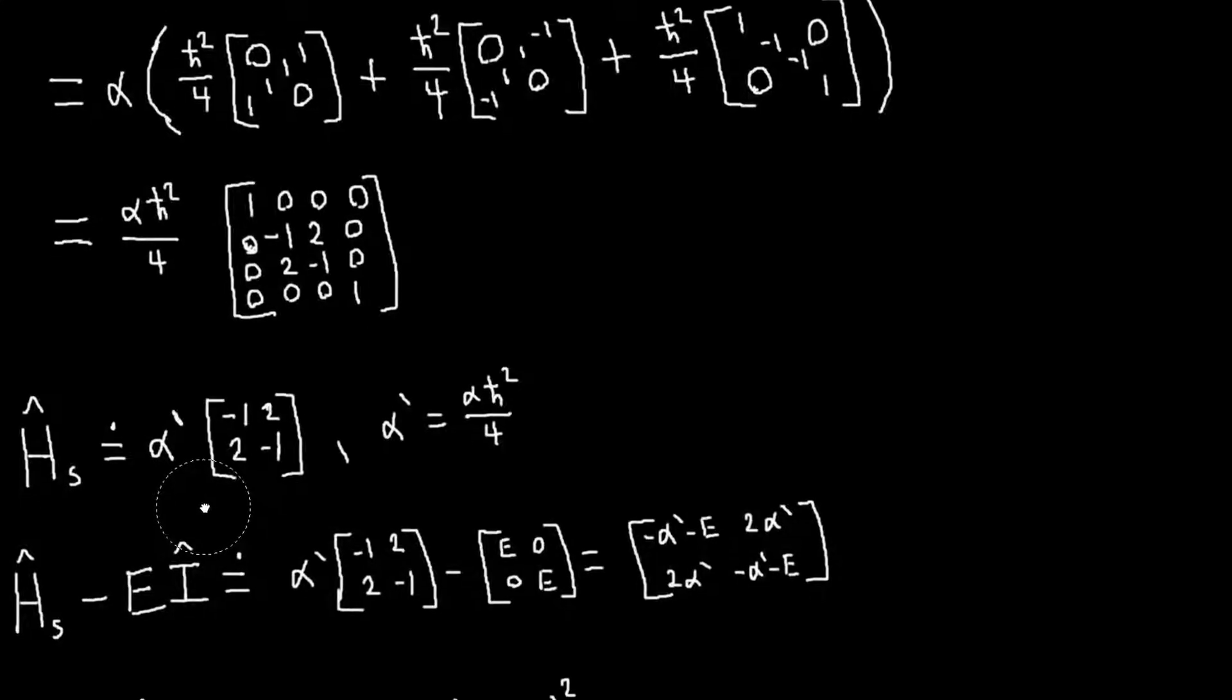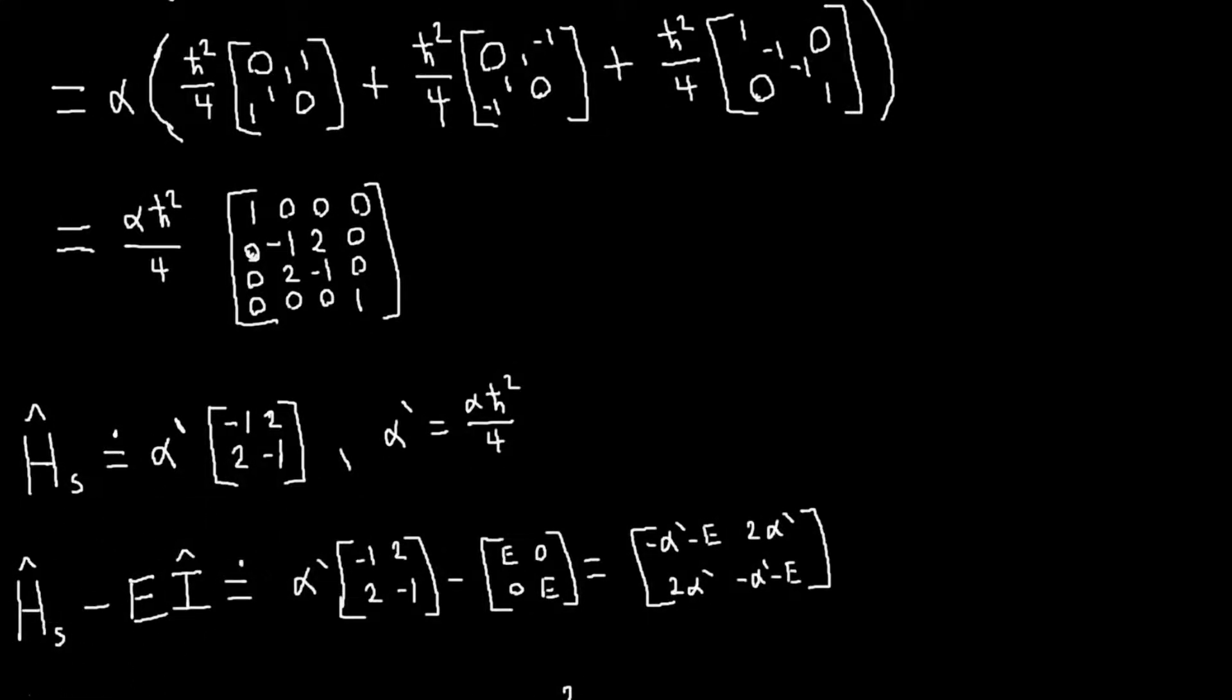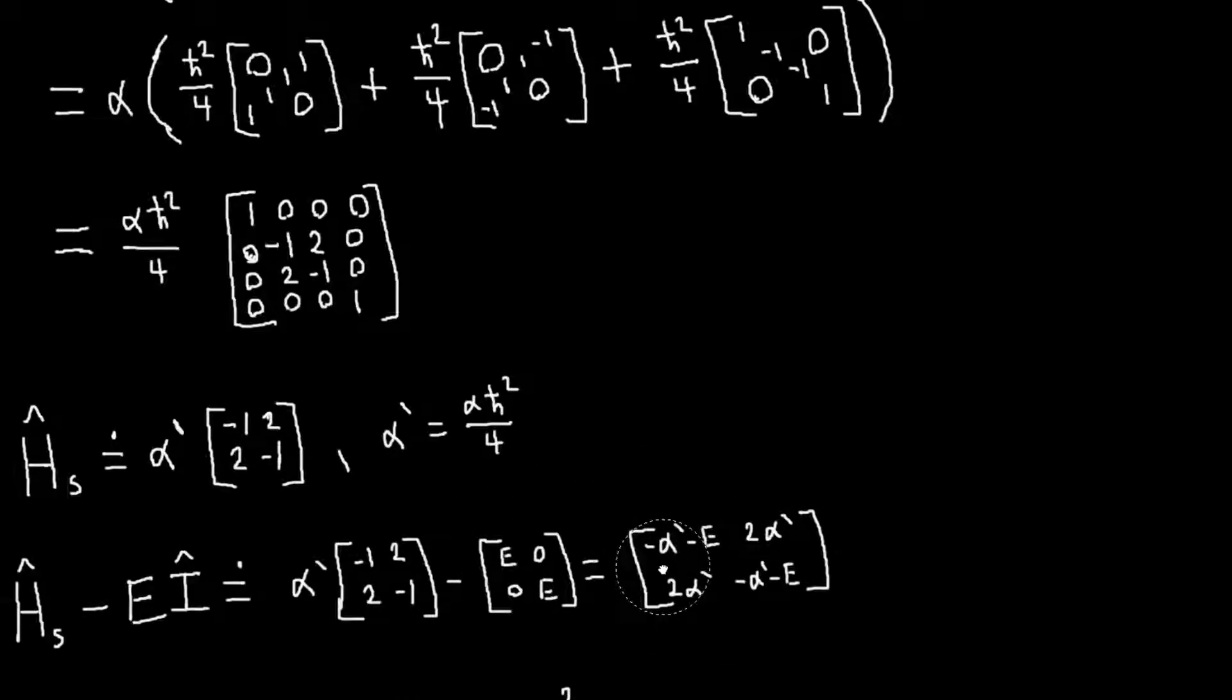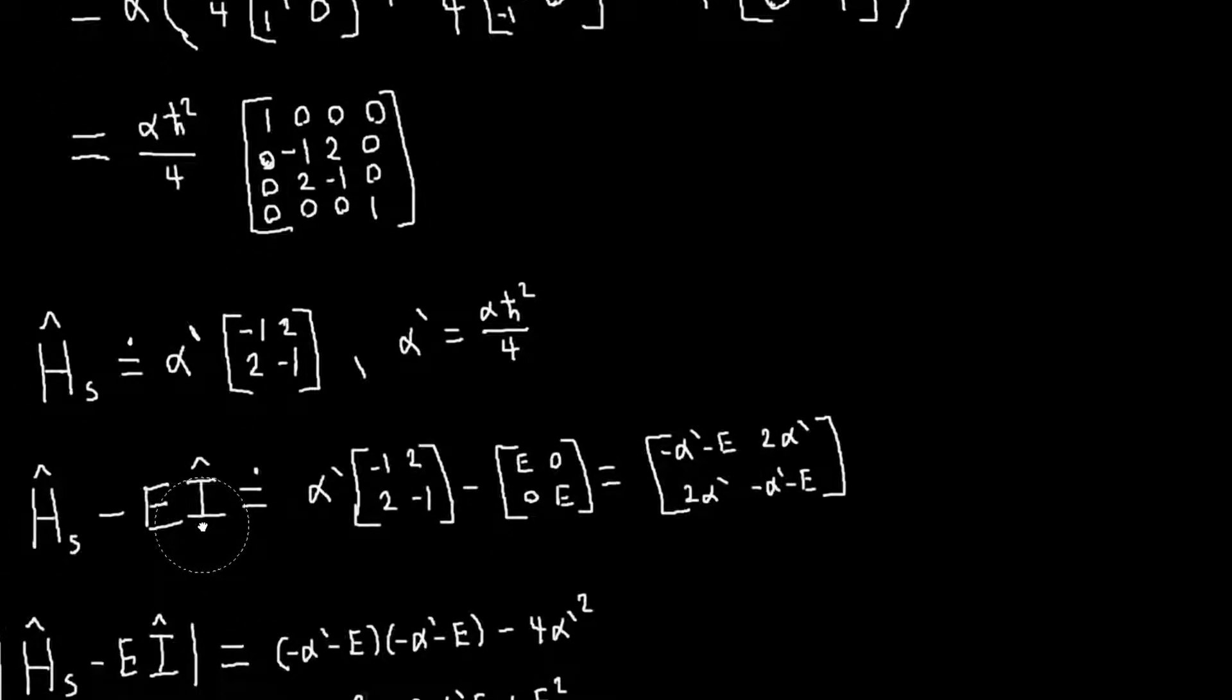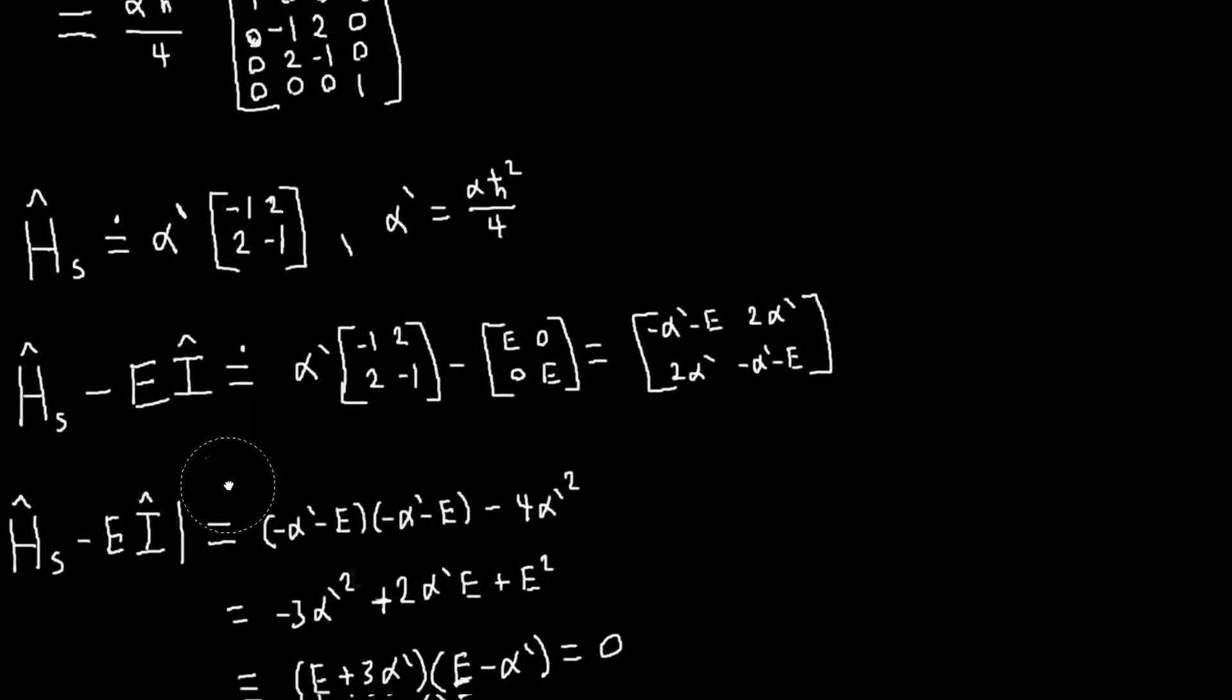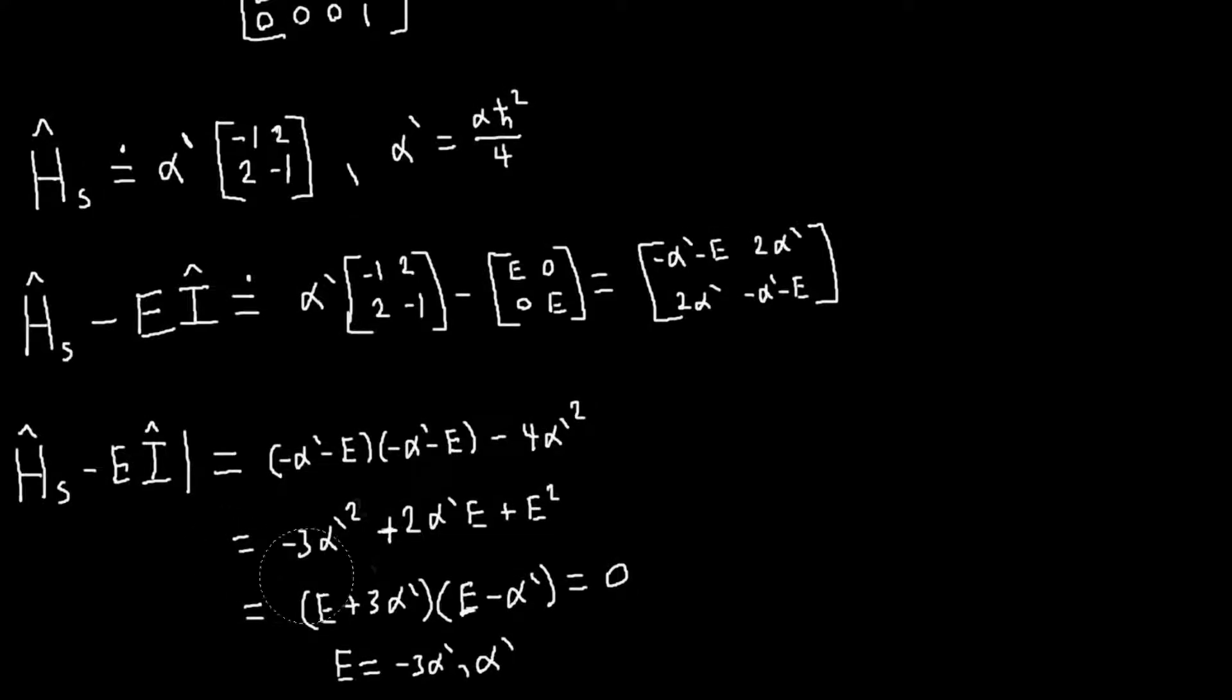So we want to find the eigenvalues and eigenvectors of this matrix. We do that in the normal way, we form this thing. Just work it out, and we get this. And then we calculate the determinant of this. You calculate the determinant of this, set it equal to zero, that will give you the eigenvalues. And so the eigenvalues we get are alpha prime and minus three alpha prime.